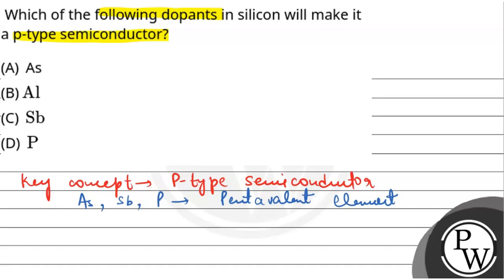This is our trivalent element, and this is what helps with p-type conductor. So the correct answer is option B, aluminum (Al).